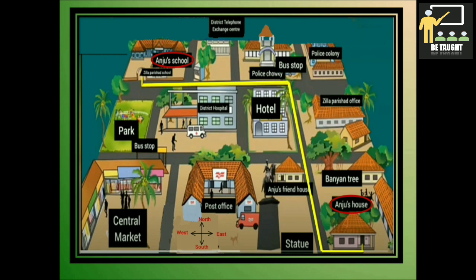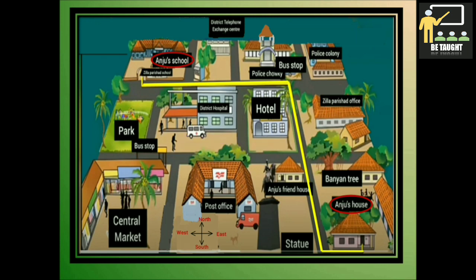While the hotel, district hospital, and park are situated to the south direction. Mention the directions in which she must turn on the way to school. On the way to school, Anju must turn in the west direction.